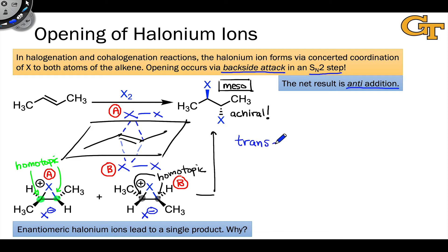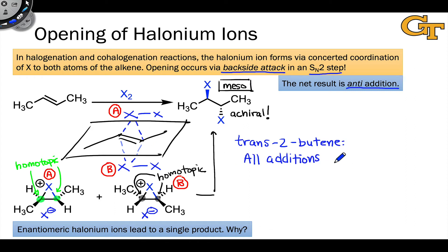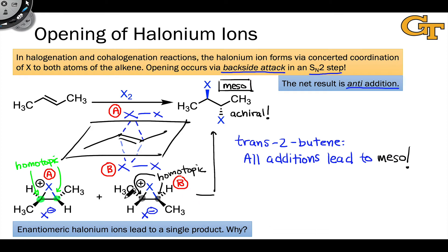What we can conclude from this analysis is that for trans-2-butene, which is the molecule we started with, all additions that differ in their stereochemical course lead to the meso product. Even though we generate enantiomeric halonium ions in the middle of the mechanism, those are consumed in such a way that they converge to a single product.